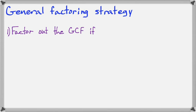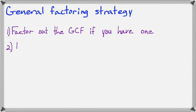Well, there are three steps. Step one: factor out the GCF if you have one. That should always come first. Every time you see a factoring problem, look for a common factor first and do that very first thing.